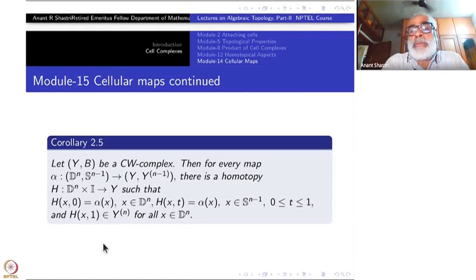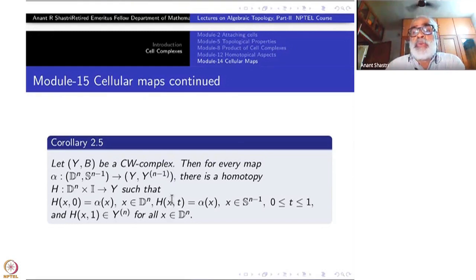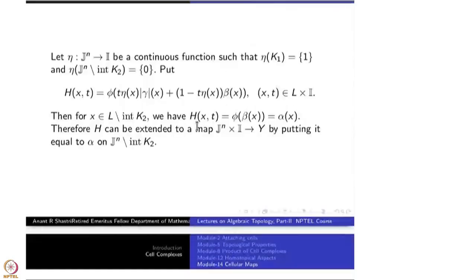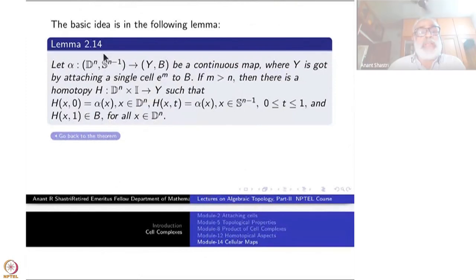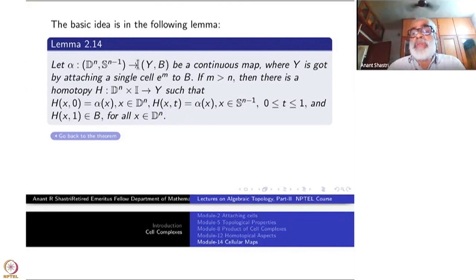Carrying on with the proof of the cellular approximation theorem, we have proved it for the case when both domain and codomain have just one cell. I will recall that lemma and then immediately extend it. The lemma was: given a map from (D^n, S^{n-1}) — a relative CW complex with one cell — to (Y, B), also a relative CW complex with one cell, where the dimension m of that cell is bigger than n, then any such map can be homotoped to a map whose image on X^1 is inside B.